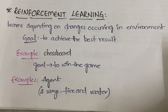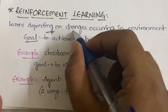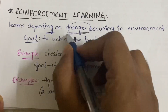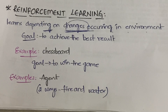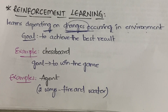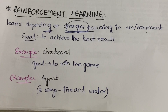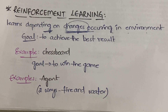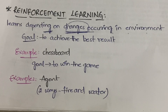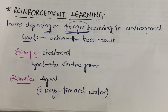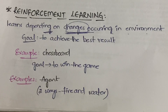So what is reinforcement learning? Reinforcement learning will learn depending on the changes which are happening in the environment. You know what supervised learning is — the human will explicitly teach the machine how to perform a particular action. In unsupervised learning, the computer itself will learn with no human explicitly teaching it. In reinforcement learning, learning also happens, but it depends on the changes occurring in the environment.